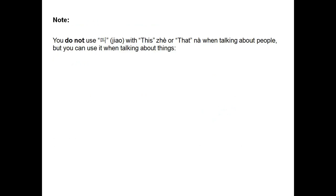You do not use 叫 with the words 'this' (这) or 'that' (那) when talking about people, but you can use it when talking about things. For example, even if you wanted to say 'this is Jane,' you cannot say 这叫 Jane. This would literally mean 'this is called Jane,' and even in English that sounds wrong.